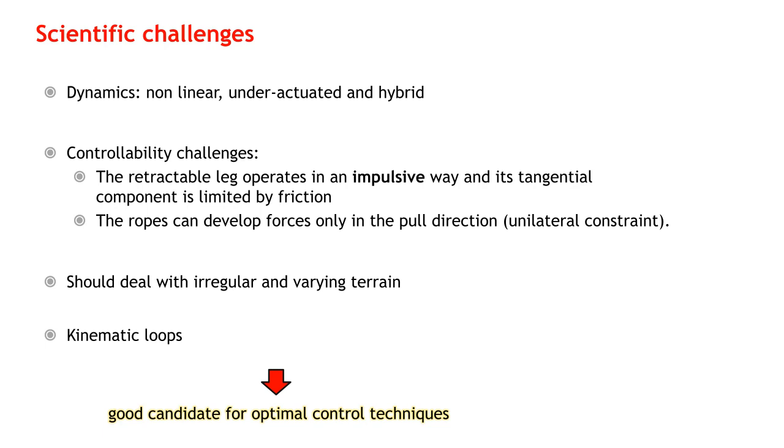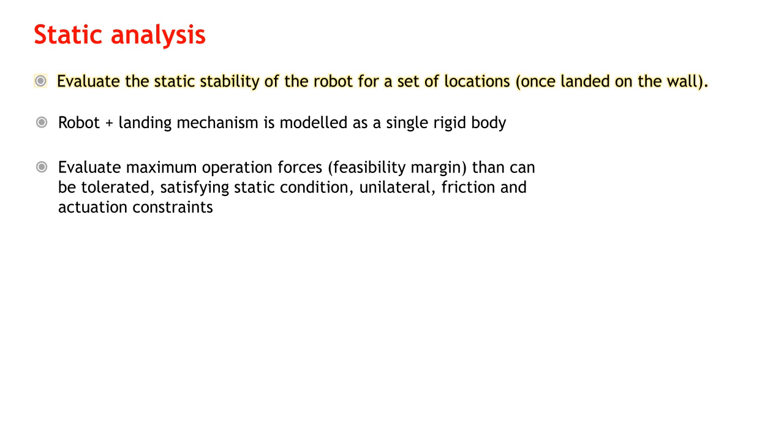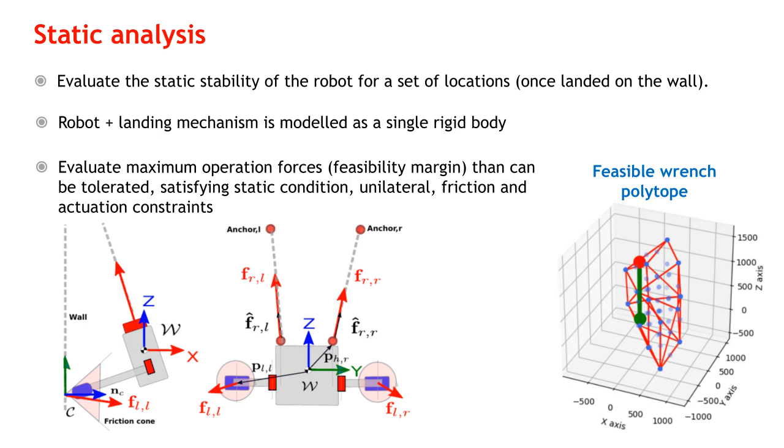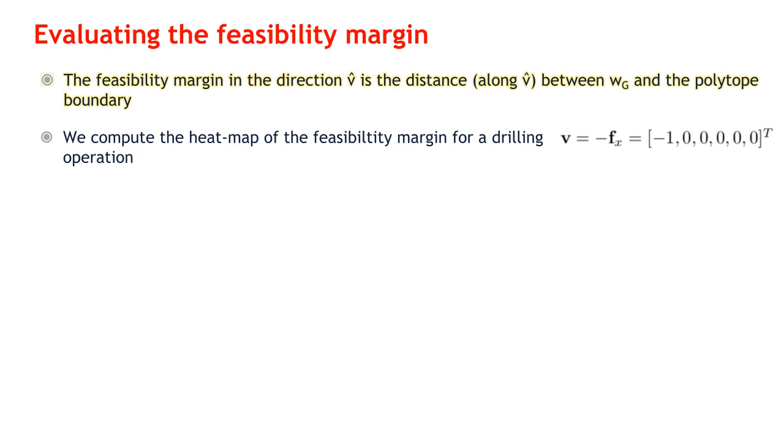We present a numerical procedure to evaluate the static stability of the robot for a set of locations once landed on the wall. The robot plus the landing mechanism is modeled as a single rigid body. We evaluate maximum operation forces that can be tolerated while satisfying static condition, unilateral, friction, and actuation constraints. The feasible wrench polytope is a compact representation of the mentioned constraints projected at the center of mass. The feasibility margin gamma in the direction v is the distance between the gravitational wrench and the polytope boundary. It is a synthetic metric to estimate the amount of external forces and moments available for operations. As an example, we compute the heat map of the feasibility margin for a drilling operation for two different wall inclinations.